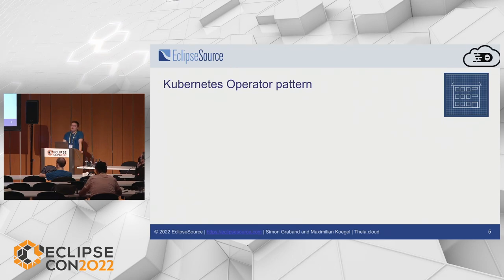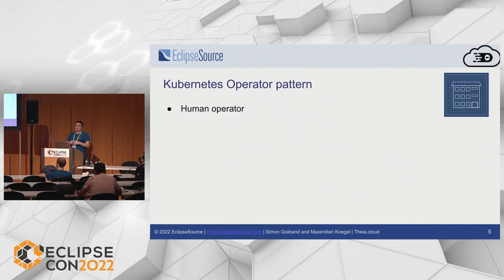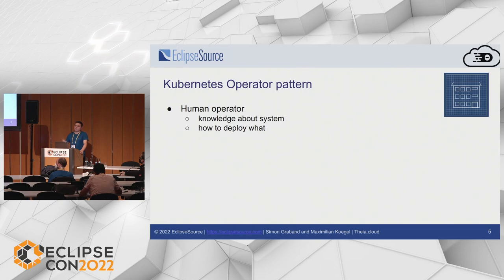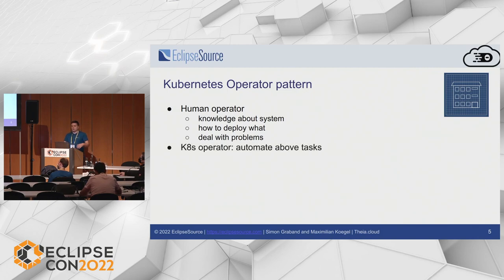I promised we would talk about what a Kubernetes operator actually is. Let's look at the operator pattern. Envision a human operator who needs to manage your cluster and do jobs that are most of the time automated. They need knowledge about the system — what services are available to connect to. They need to know how to deploy things — for a specific session of an intensive app, they need to know how many CPU cores or how much memory to allocate to that pod. And they need to be able to deal with problems.